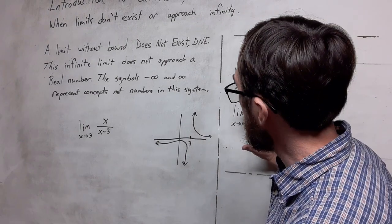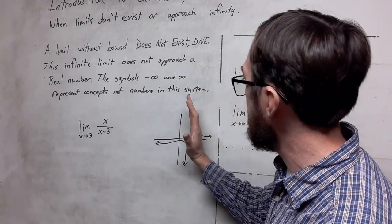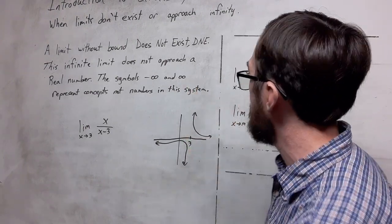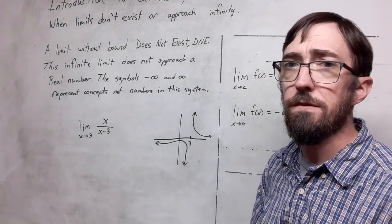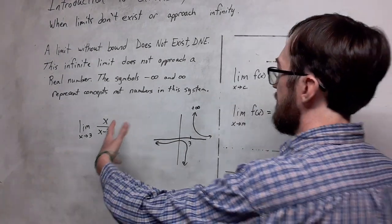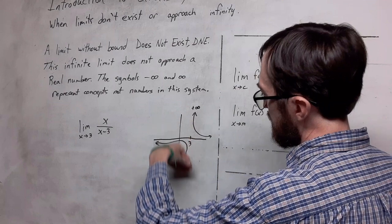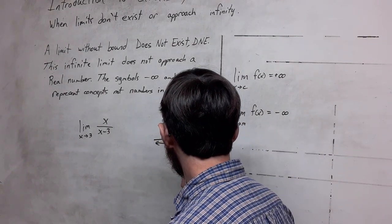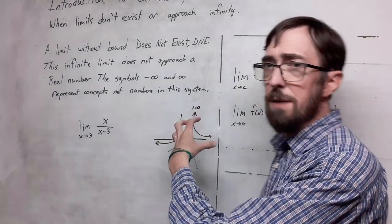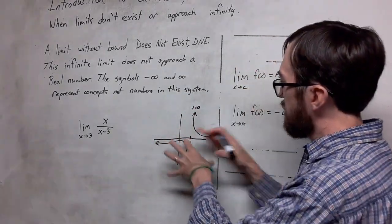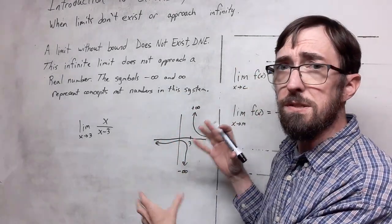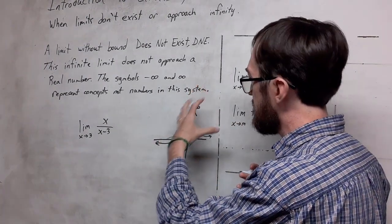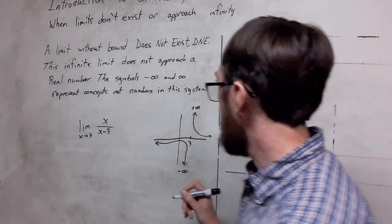As we look over here, if I approach 3 from the right, you see that this is going towards positive infinity. And as we approach from the left, we are going towards negative infinity. This particular type of graph, it is plotted in two pieces because this is a discrete type of function.